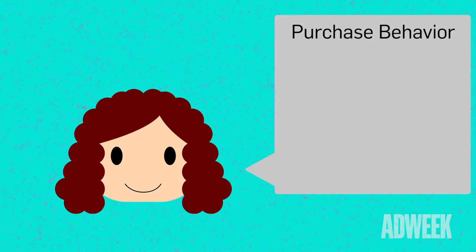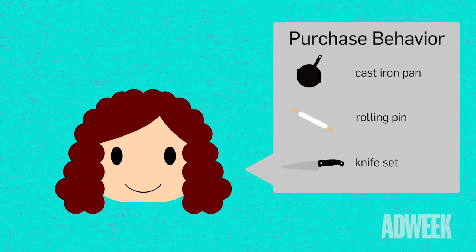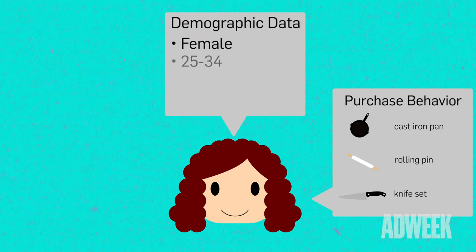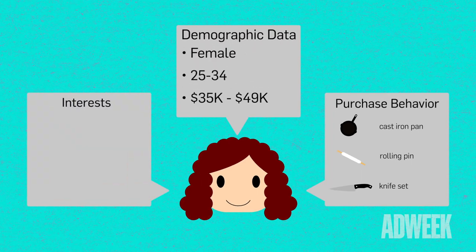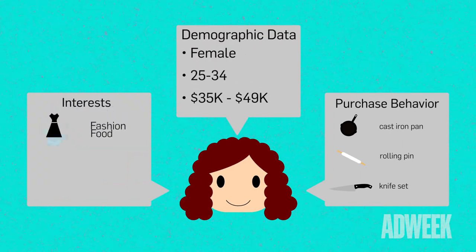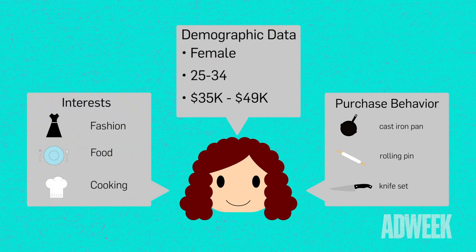Addressable creative has really been about how we create resonance with our audiences using things like purchase behavior data, demographic data, and their interests like fashion, food, cooking — and really allowing us to tailor that messaging.